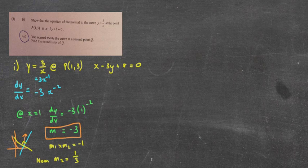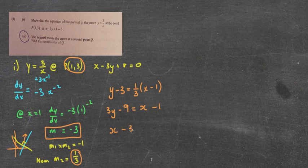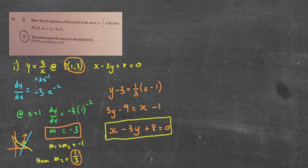I've got my gradient of the normal, which is 1 third, and my coordinate, which is the point (1, 3). Let's put it into the point-gradient formula: y minus y1 equals m times x minus x1. Multiply it all by 3 because we want it in general form: 3y minus 9 equals x minus 1. Put it all to the right-hand side so x is positive: x minus 3y plus 8 equals 0. Thankfully, we've got that right — we have shown the equation of the normal.